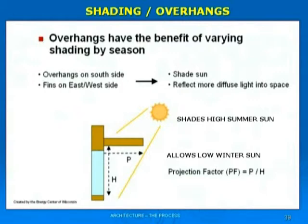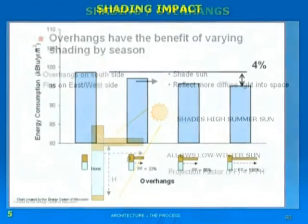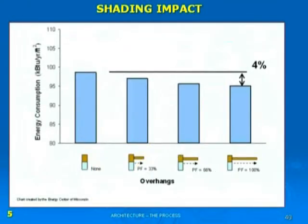The shade produced by the overhang keeps the summer sun out. If you have the relationship of the projection P and the height of the window H equal to 100%, you can save 4% at minimum off your air conditioning load. So just by merely adding a projection, you're saving 4% every single summer season. What does it cost to put the projection on? It's going to cost you something. But if you look at it in the total analysis — if you're going to stay in that building 10 years, 20 years, or if it's a rental situation going on for 75 years — that projection is making money for you.